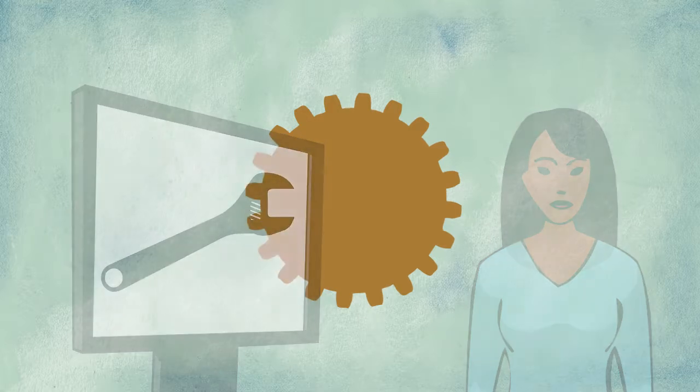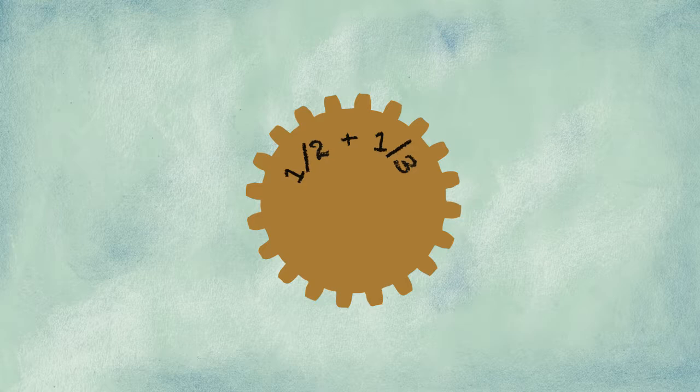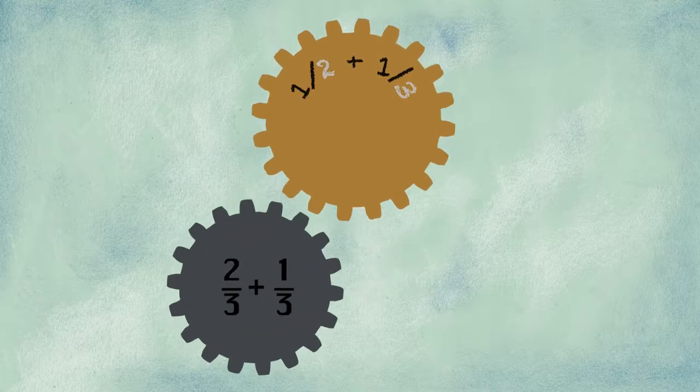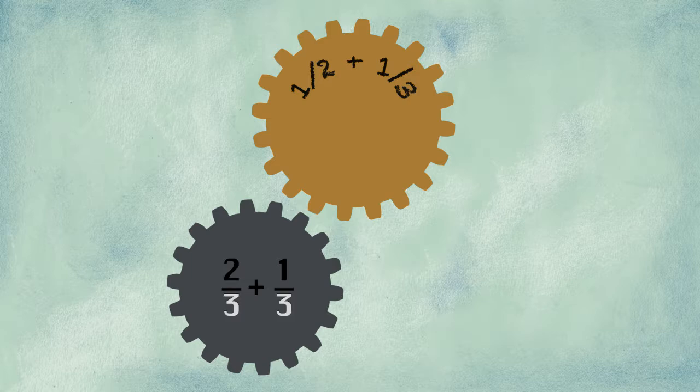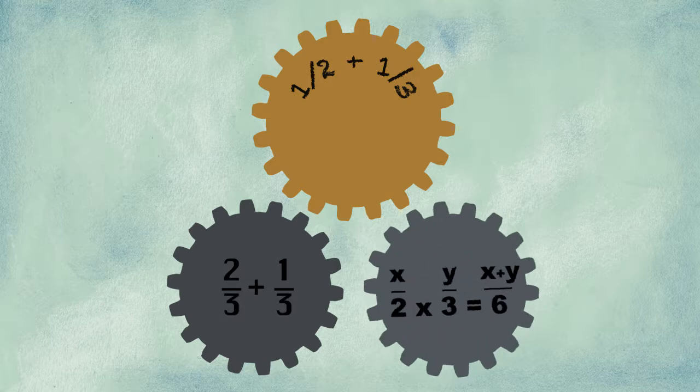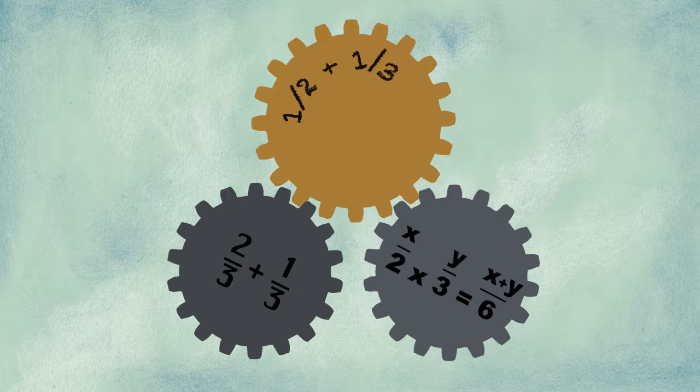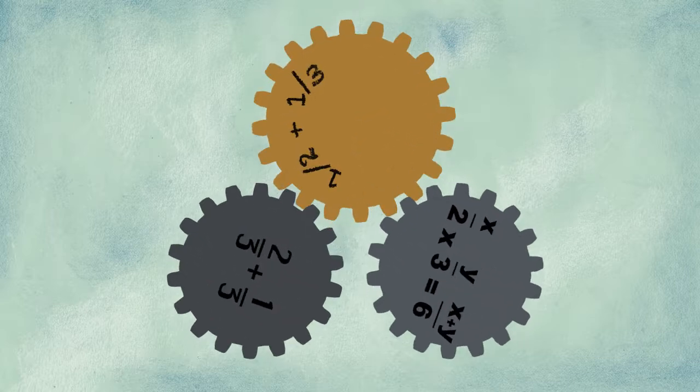Take a simple example. Imagine that you're teaching students to add fractions with different denominators. First, the students need to learn how to add fractions with the same denominator. Then they need to learn how to find the least common denominator. They can't add fractions with different denominators until they've learned both of these skills.